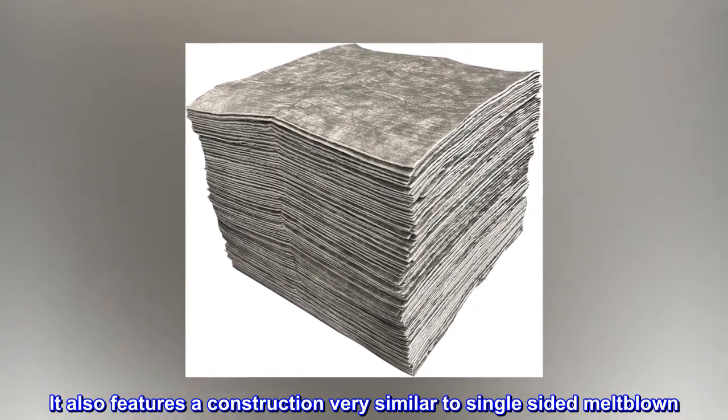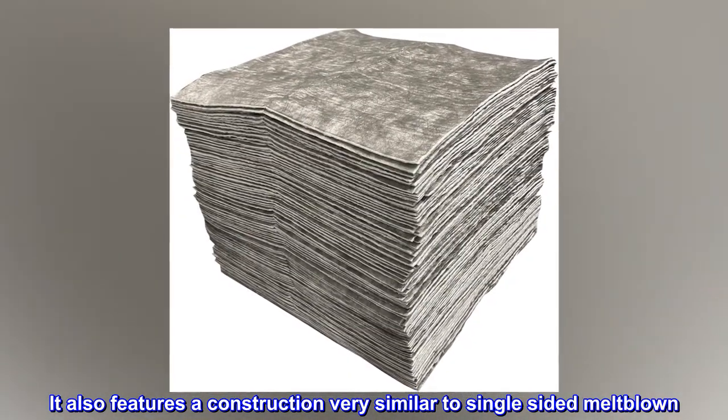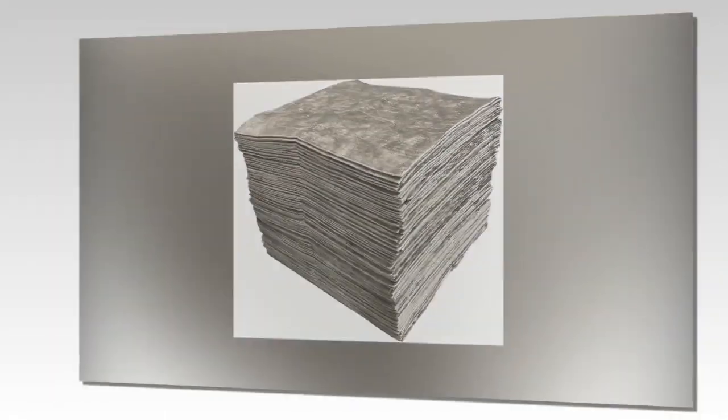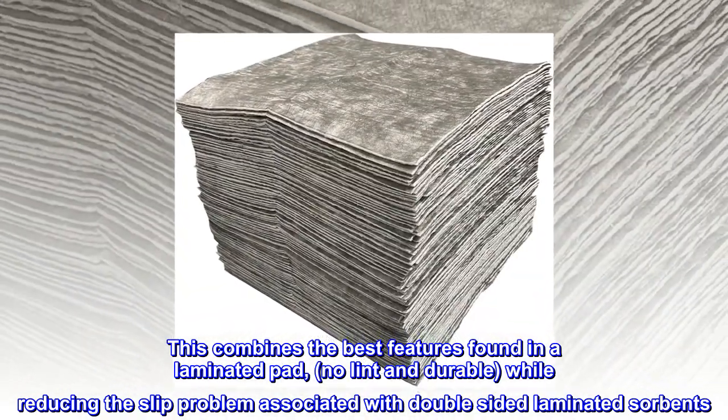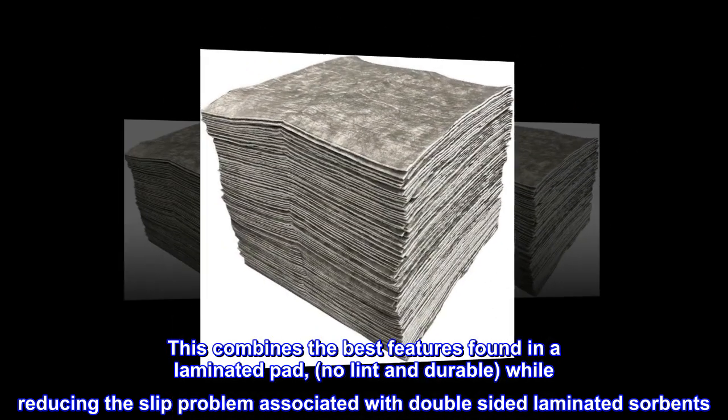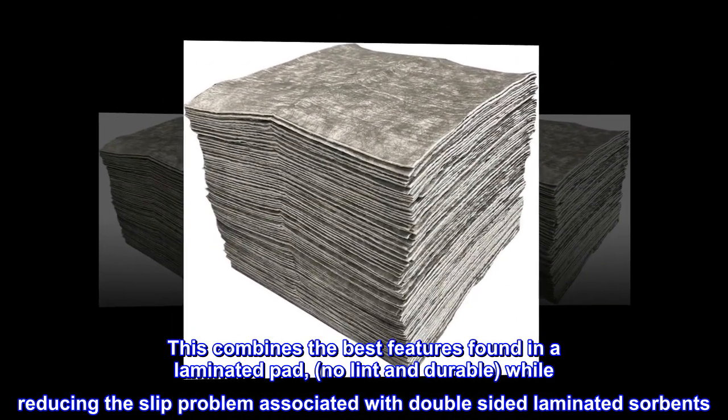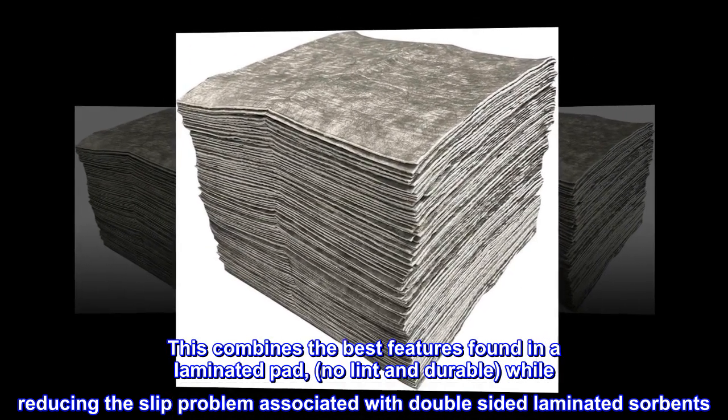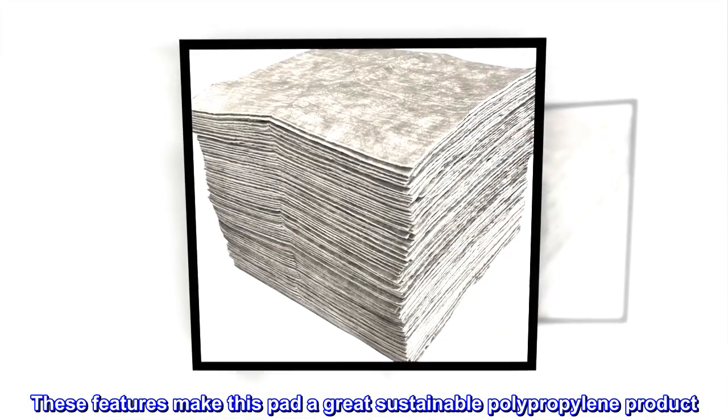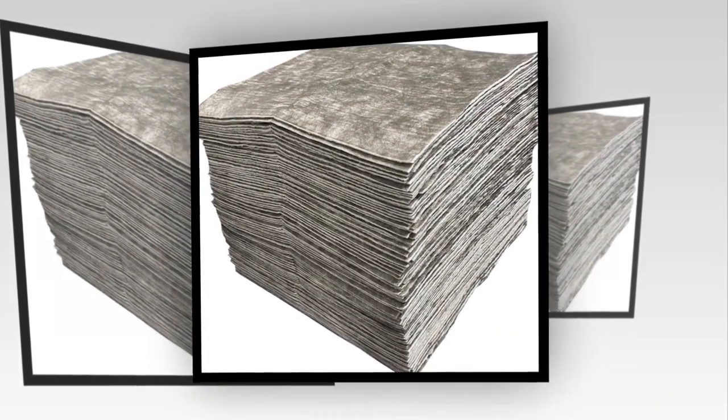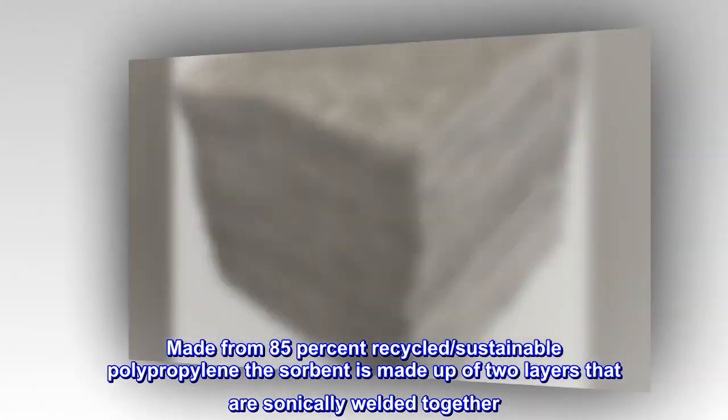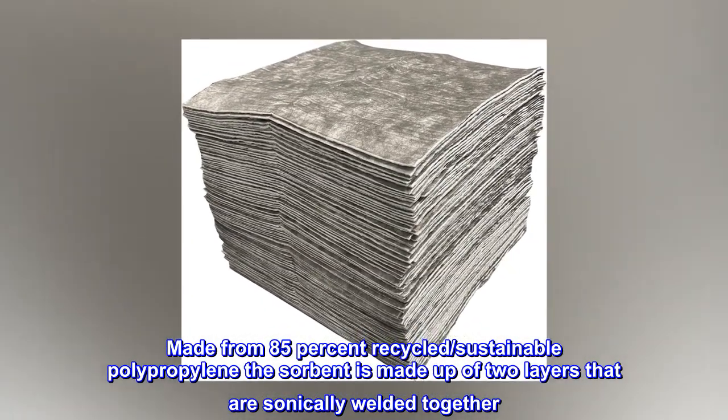It features a construction very similar to single-sided melt blown. This combines the best features found in a laminated pad: no lint and durable, while reducing the slip problem associated with double-sided laminated sorbents. These features make this pad a great sustainable polypropylene product.